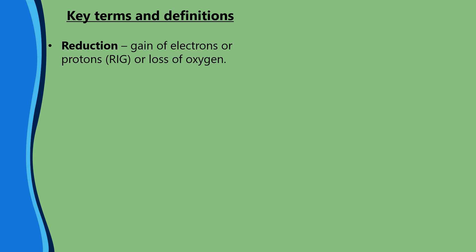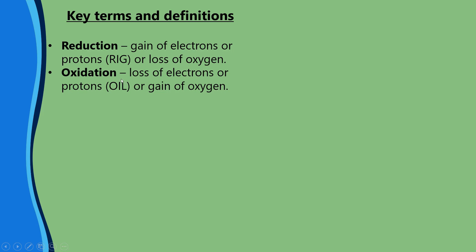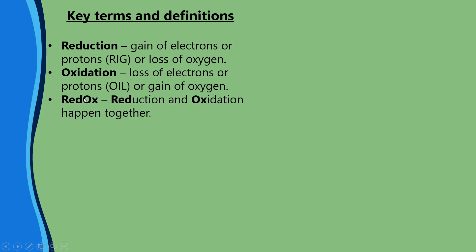Some key terms and definitions we need to go over first. Reduction is the gain of electrons or protons, or the loss of oxygen, and we remember it with the mnemonic RIG — reduction is gain. Remember, protons can also be H⁺. Oxidation is the loss of electrons or protons — mnemonic OIL, oxidation is loss — but oxidation can also mean the gain of oxygen. These always happen together, so we call them redox reactions.